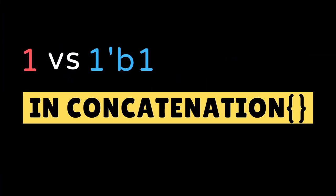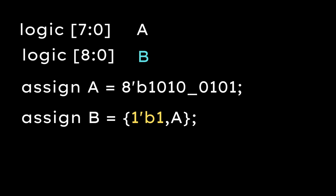Now, let's use them in concatenations. In this example, we have two variables A and B. A is of 8 bits and B is of 9 bits. A is assigned to 8'b 1010_0101 and B is concatenation of 1'b1 and A.